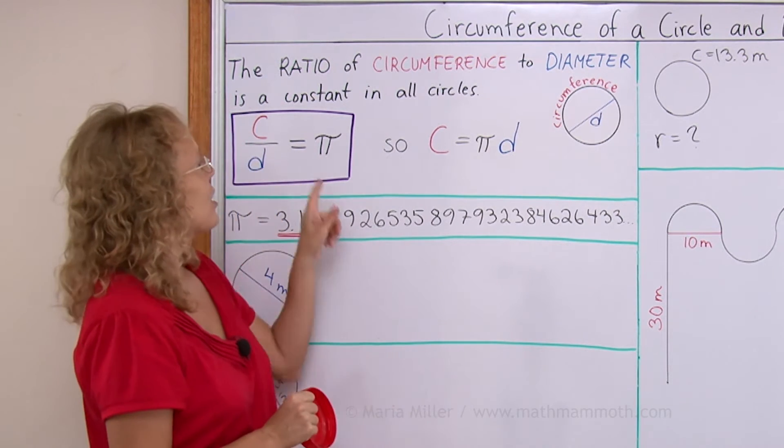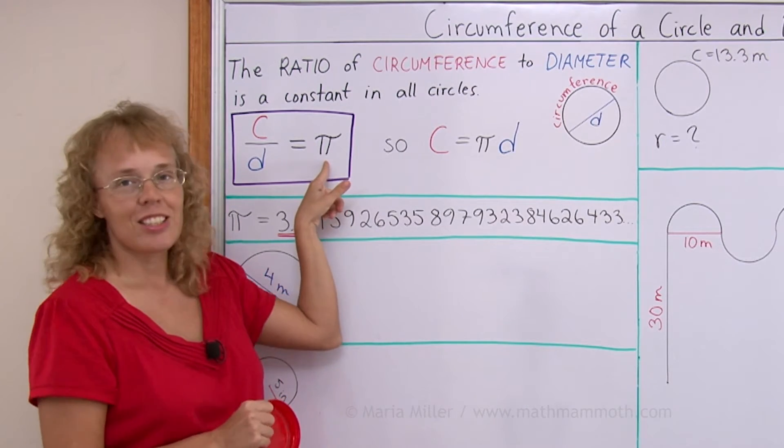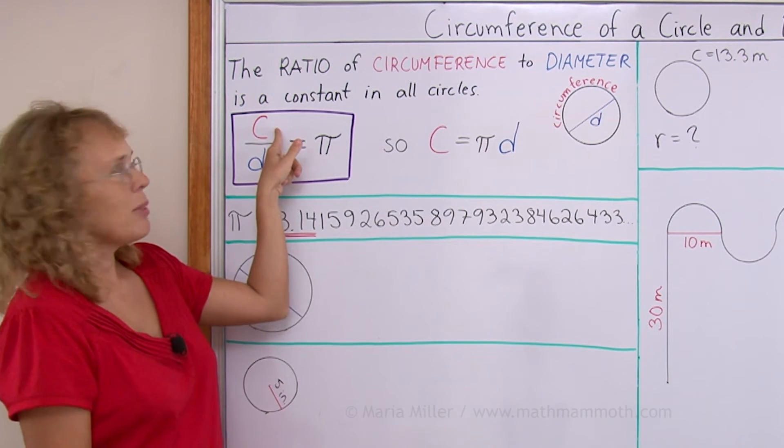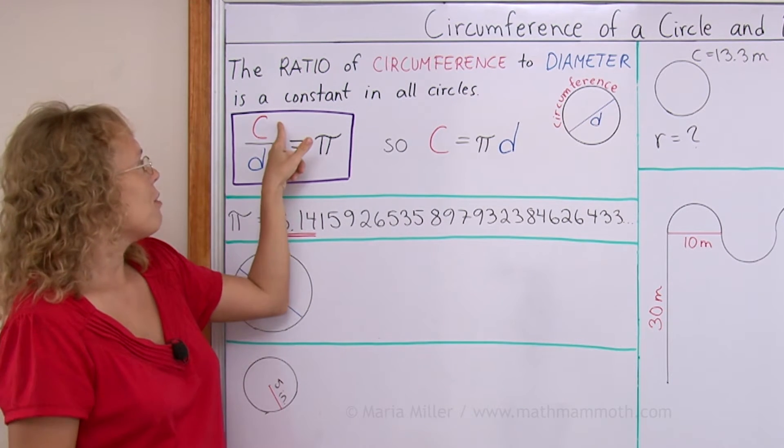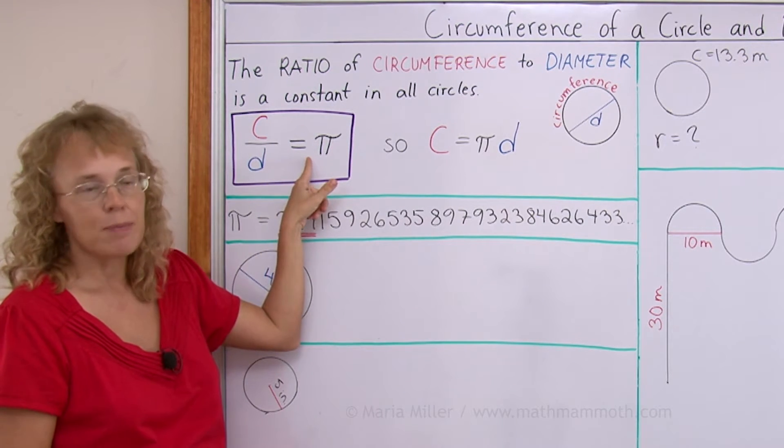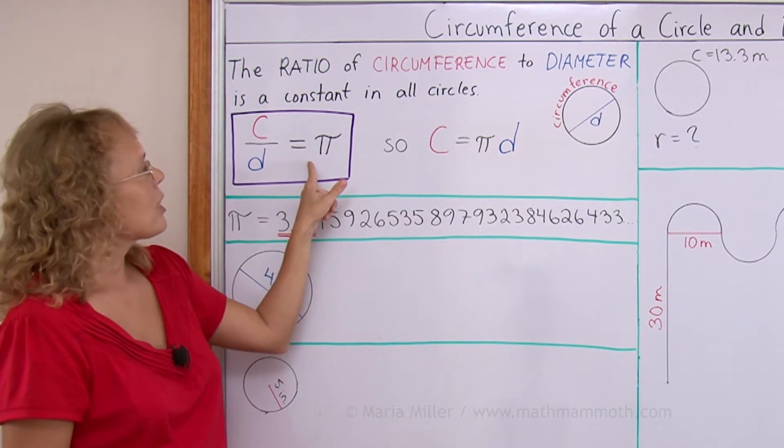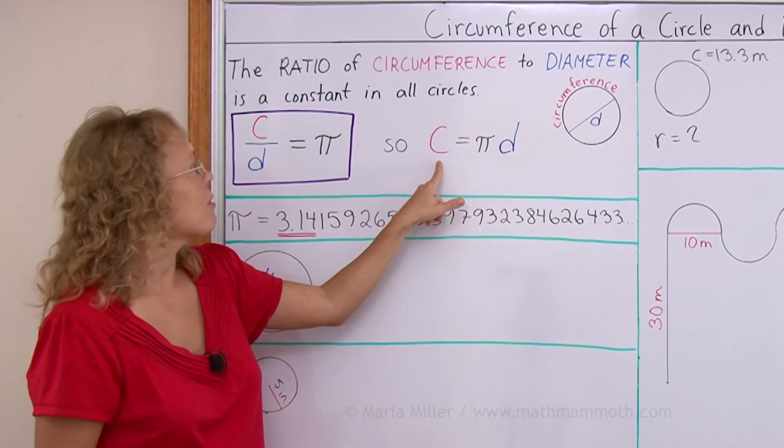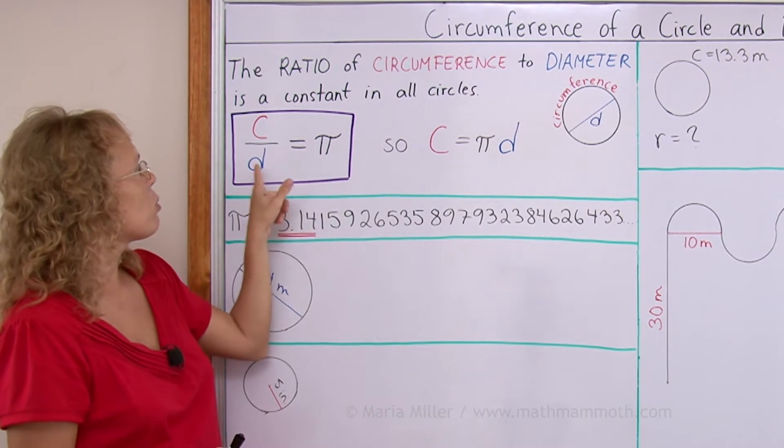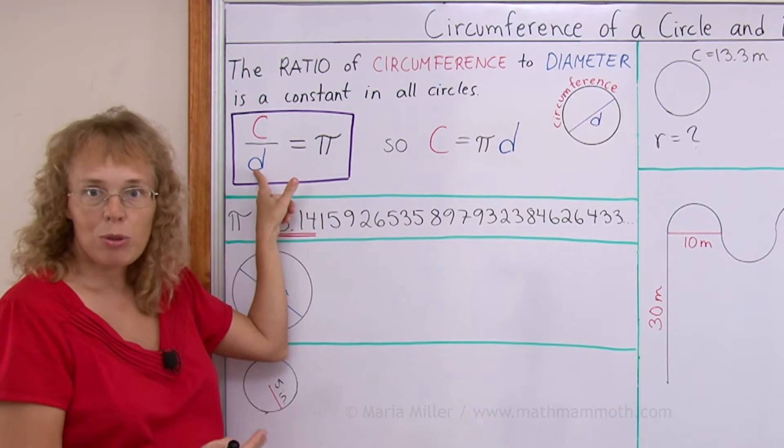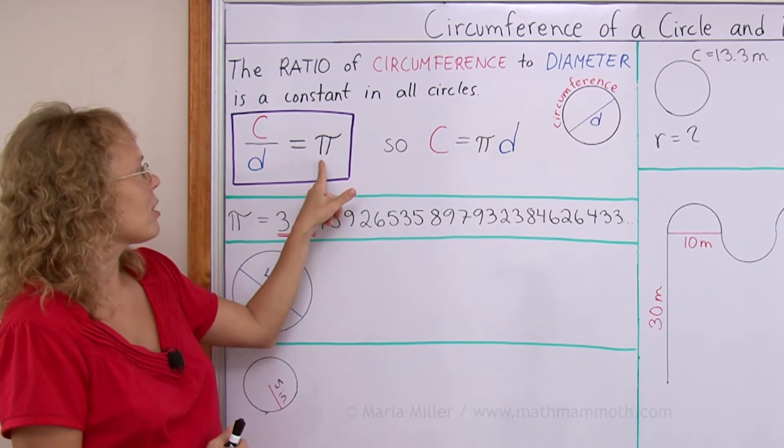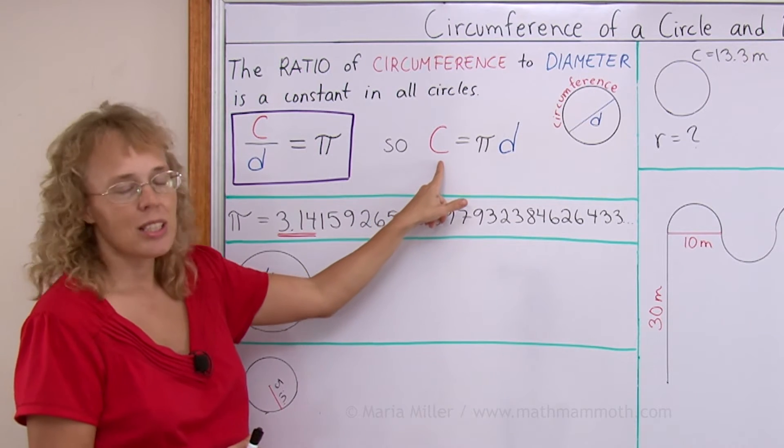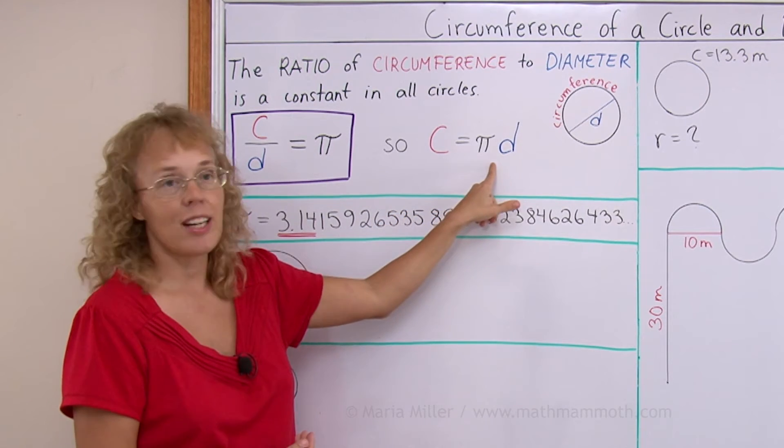And we call that number pi. We use the Greek letter pi for it. So here, C means circumference, D means diameter. Circumference to diameter equals pi. From this we also get a formula for the circumference. If you think of this as an equation and you multiply both sides of it by D, then the D will disappear from here and it will be here on this side, pi times D. So we get circumference equals pi times D.